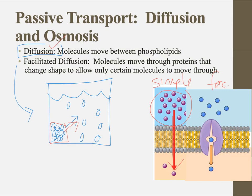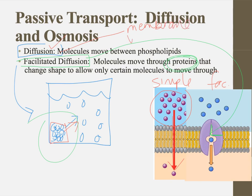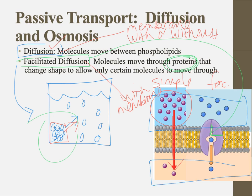Facilitated diffusion, on the other hand, definitely requires a membrane, because facilitated diffusion is the movement through carrier proteins. In just a cup of water, we don't have carrier proteins, so that doesn't make any sense. We have to have carrier proteins for something to move via facilitated diffusion. Simple diffusion could occur with or without a cell membrane. Facilitated diffusion definitely requires a membrane. However, they are both moving down the concentration gradient without the input of energy — just in slightly different ways.